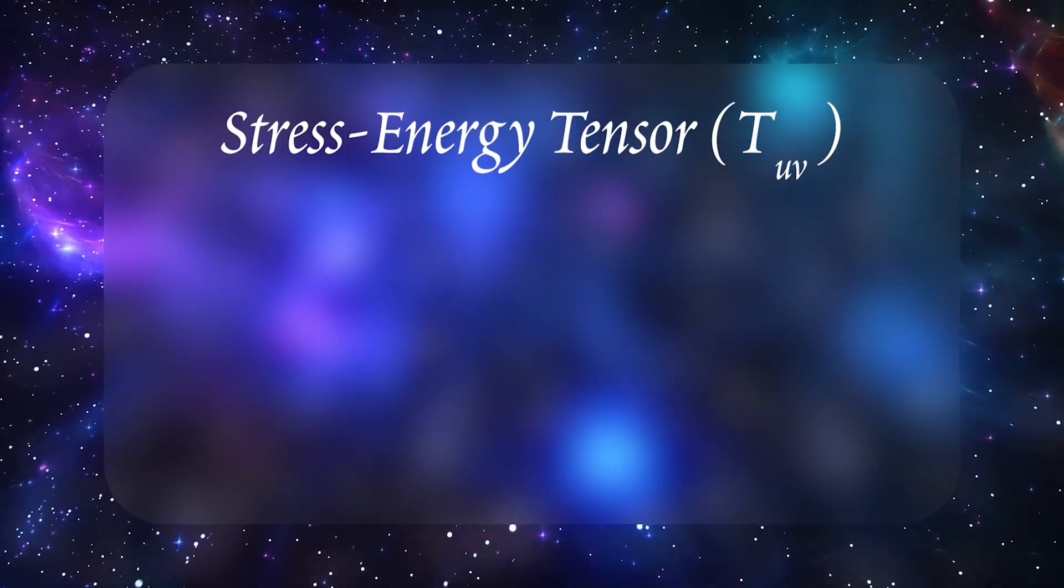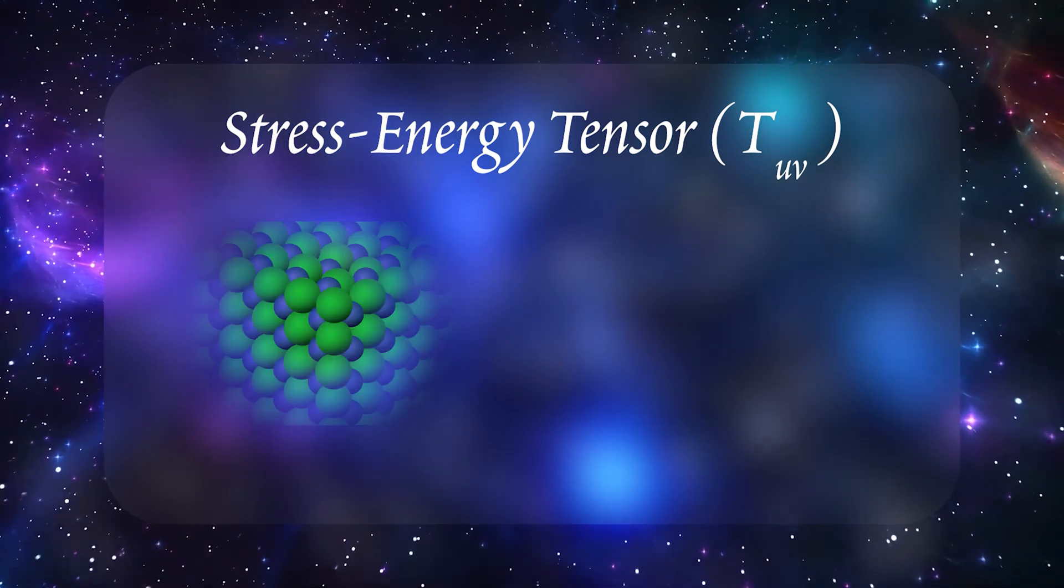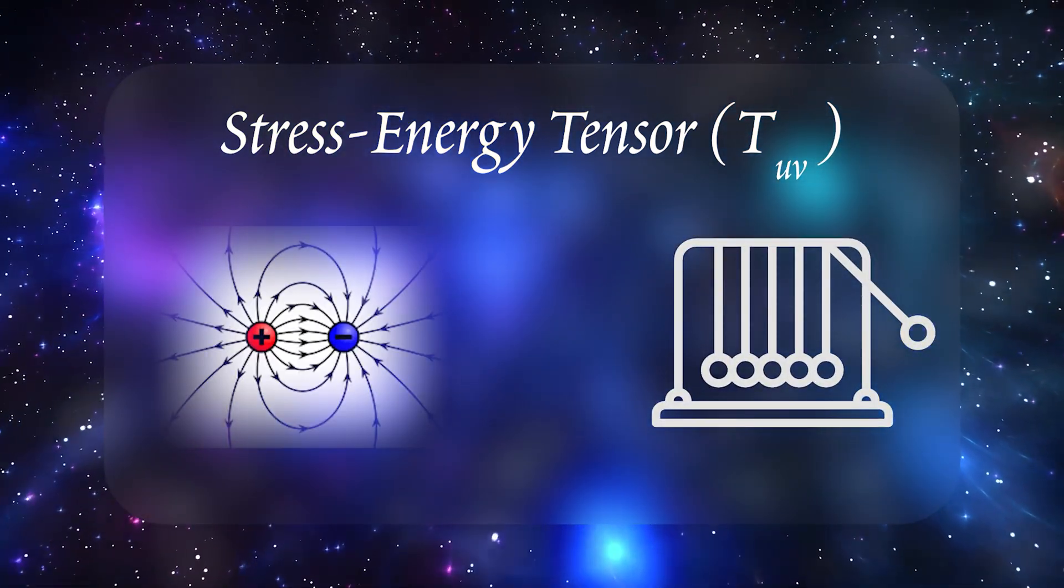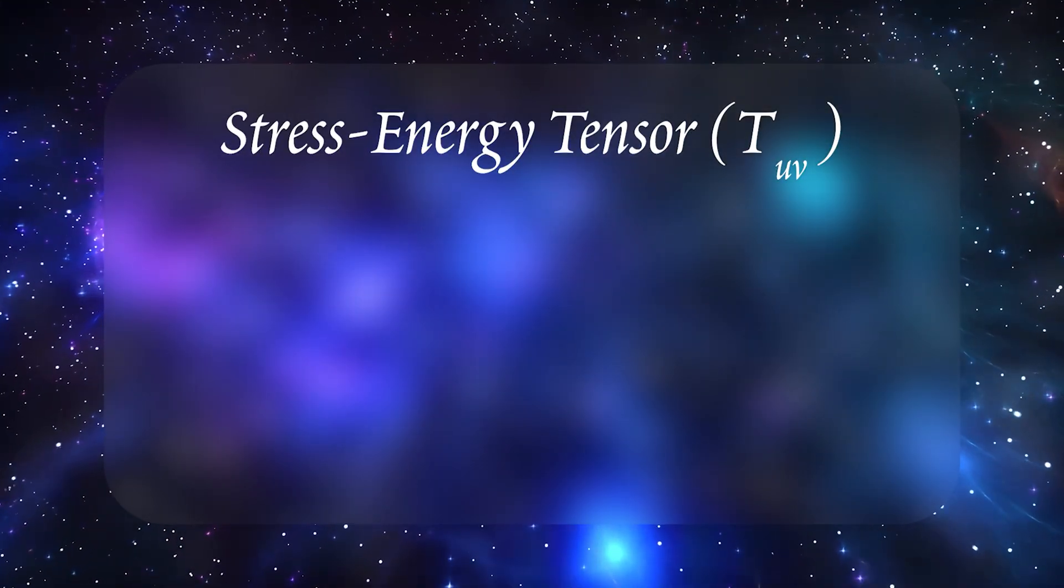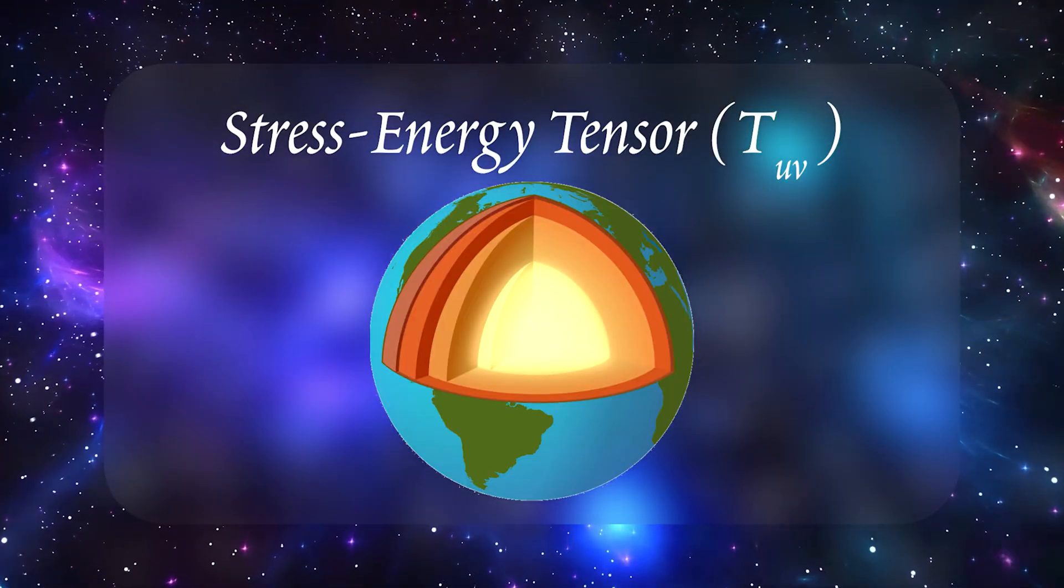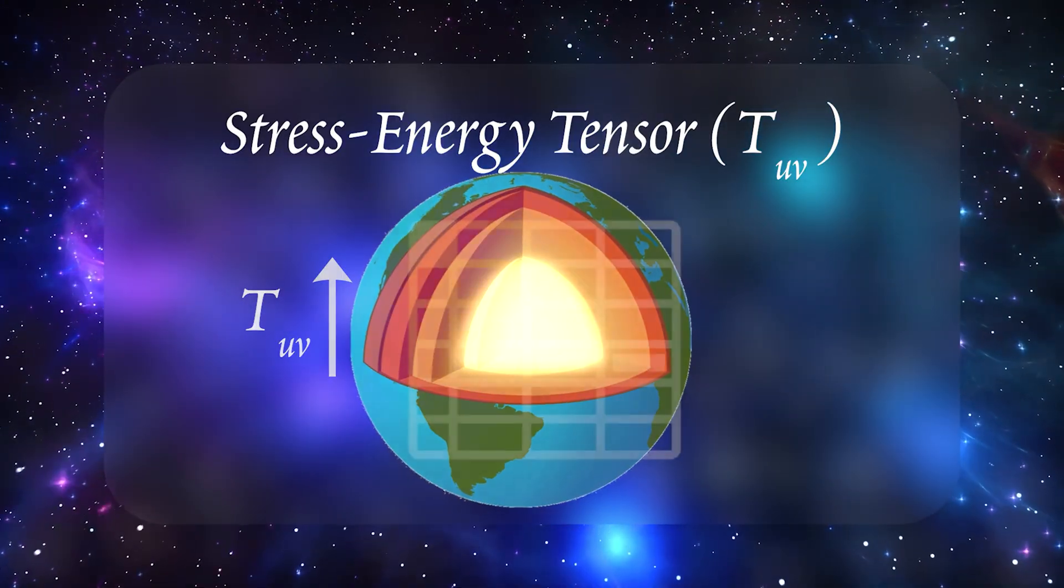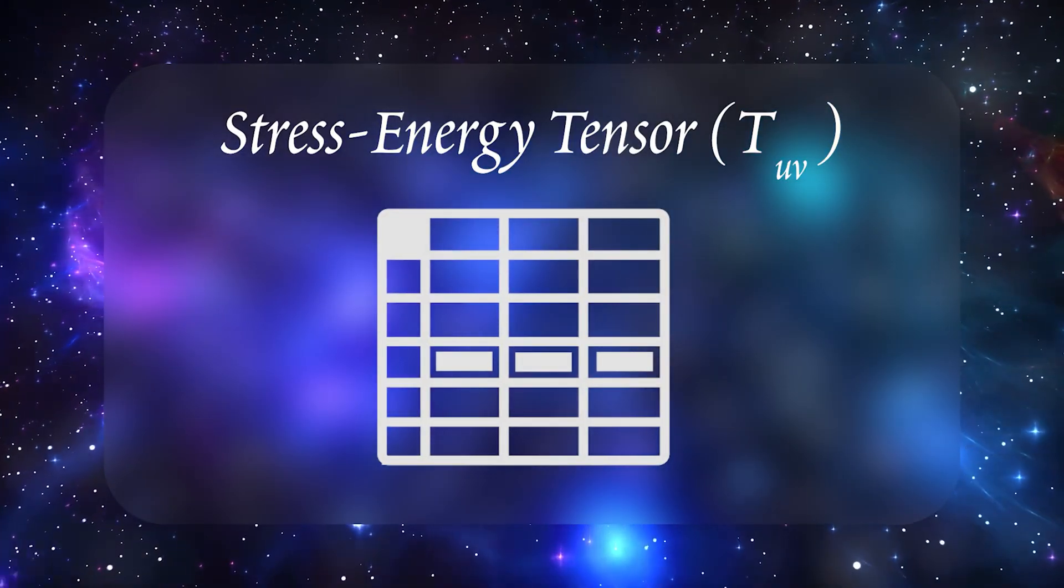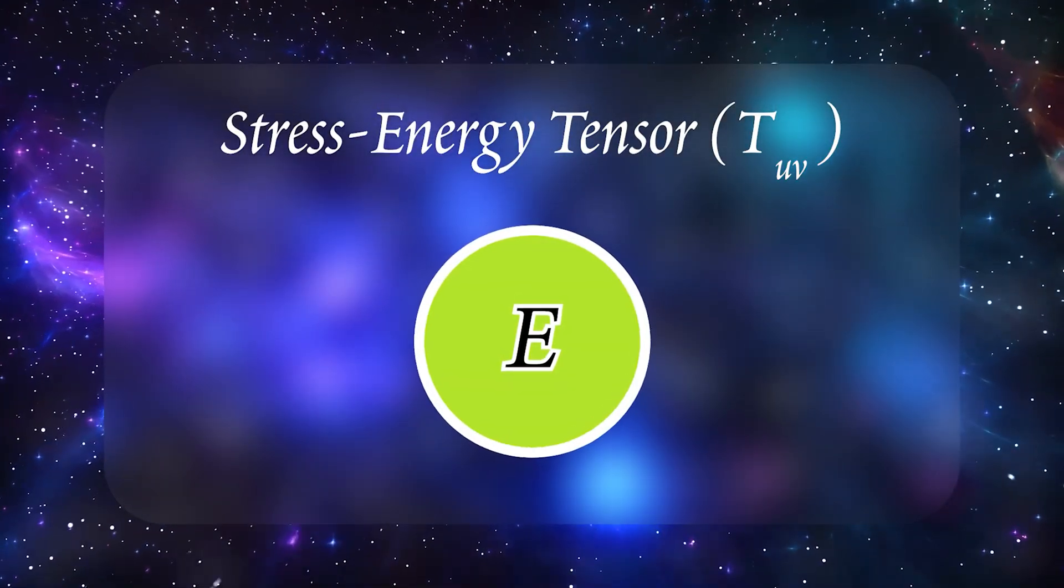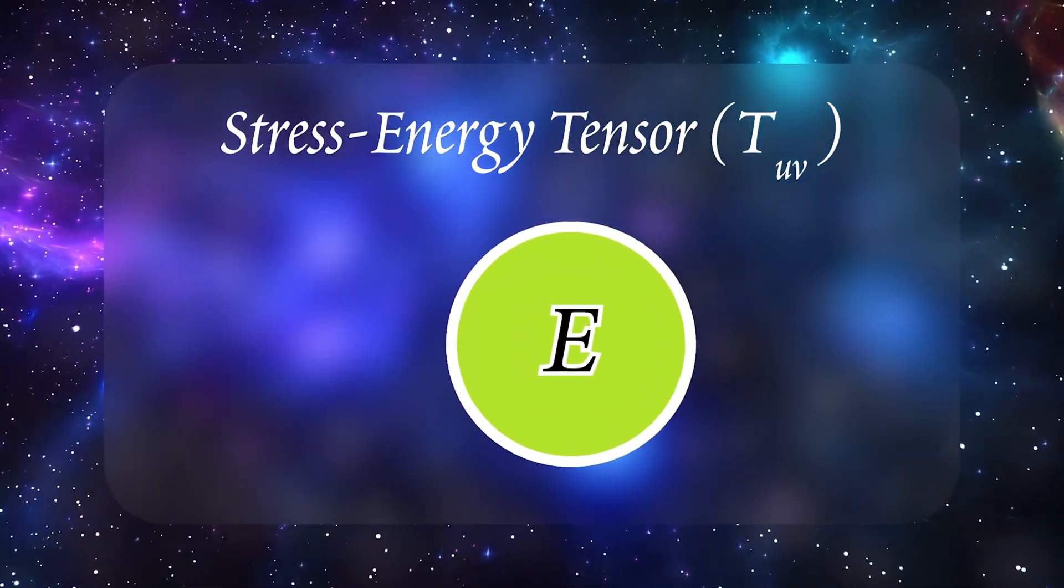Finally, we have the stress-energy tensor, that cosmic ledger we introduced earlier. It tracks everything from the density of matter to the flow of momentum, from electromagnetic fields to pressure in a star's core. In other words, if you have more matter or energy jammed into one spot, the stress-energy tensor spikes there. It's a whole table of how energy and momentum shift in space and time. It's multi-dimensional, telling you not only how much energy is present but also in which direction it's moving or pressuring.